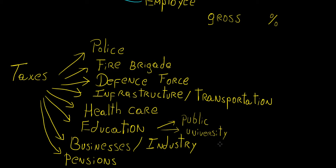In other countries you might be surprised — in Germany, for example, university is usually free for all students. That means a big portion of taxes needs to go toward funding, because university is quite an expensive institution. Unlike public schools, universities need laboratories, equipment, and massive spaces — a lot of stuff that public schools simply don't need.